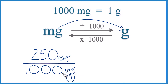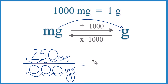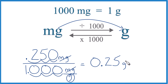Let's move the decimal point 1, 2, 3 places. And now we're just dividing by 1, but we have to move it up here too — 1, 2, 3. So 250 milligrams equals 0.25 grams. We don't need to write this extra zero here. So that's it. That's how you convert 250 milligrams to grams. The answer: 0.25 grams.